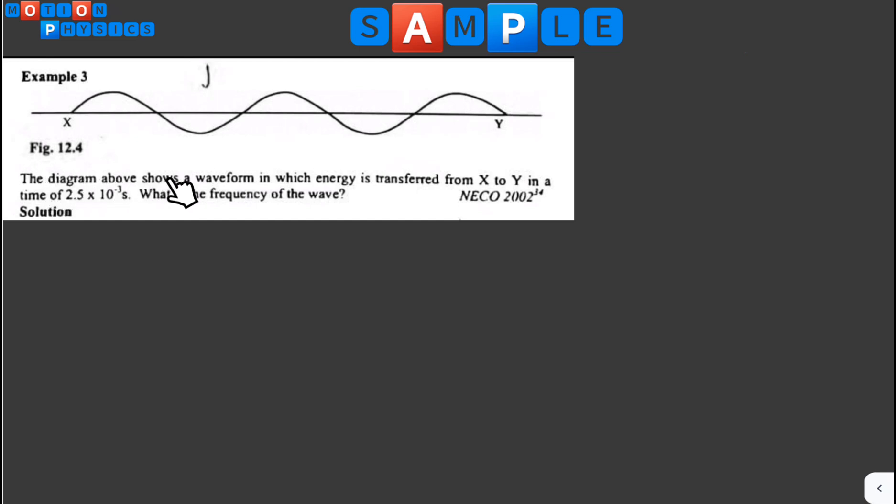The diagram above shows a waveform in which energy is transferred from X to Y in a time of 2.5 times 10 raised to the power of minus 3 seconds. What is the frequency of the wave?